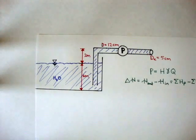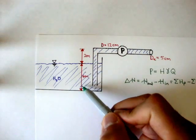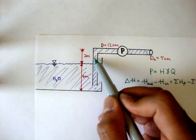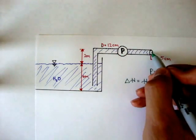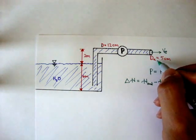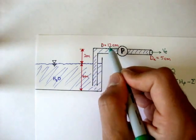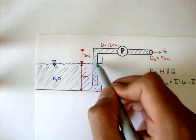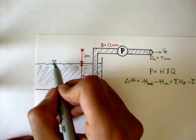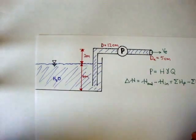Here we have a reservoir filled with water, with a water height of six meters. There's a tube that comes into the reservoir, sucks water out, goes through the pump, and exits here. We have a velocity — we'll call it velocity exit — and the diameter of the exit pipe is five centimeters. The pipe from the pump all the way into the water has a diameter of 12 centimeters. The pipe goes up two meters from the surface of the water, and the pressure at the surface is zero — it's open to the atmosphere.